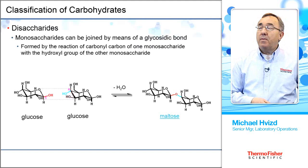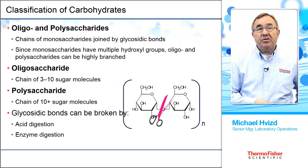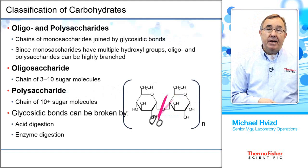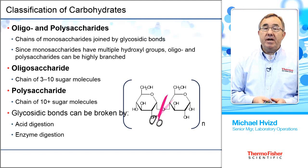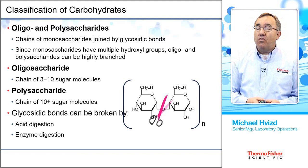Our last classification is the oligos or polysaccharides. Oligosaccharides typically are a chain of sugars three to ten molecules in length, where a polysaccharide can be a short chain or a long chain — typically a linear structure of ten or more sugar molecules joined through a glycosidic bond. We can cleave these glycosidic bonds and then analyze a larger sugar for its monosaccharide components, either through acid digestion or enzyme digestion.